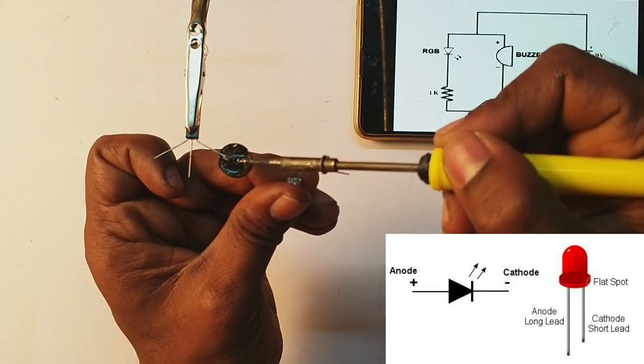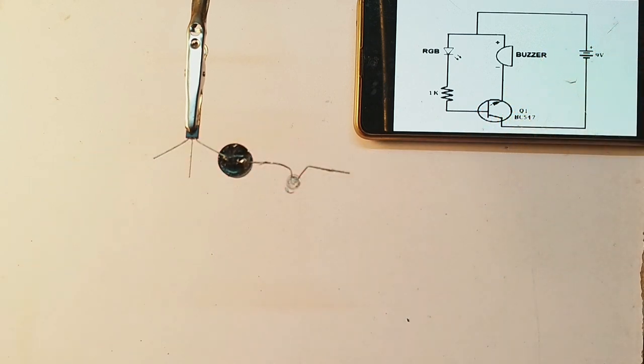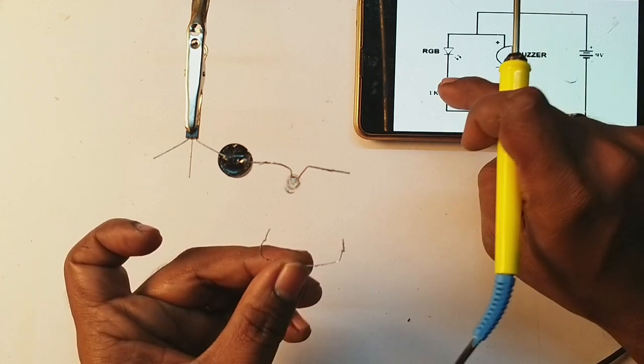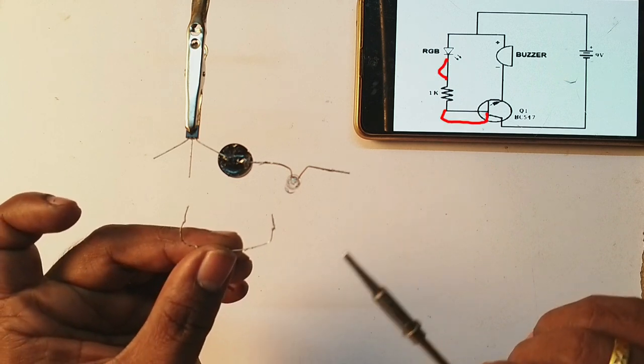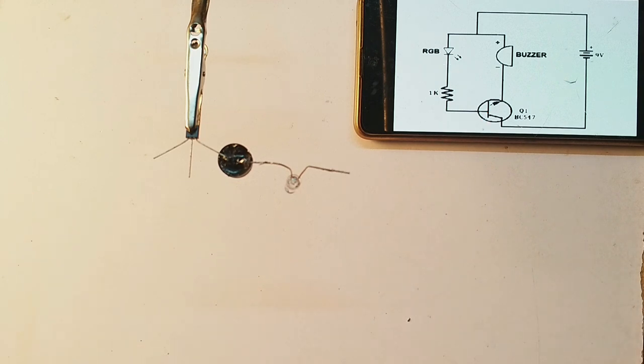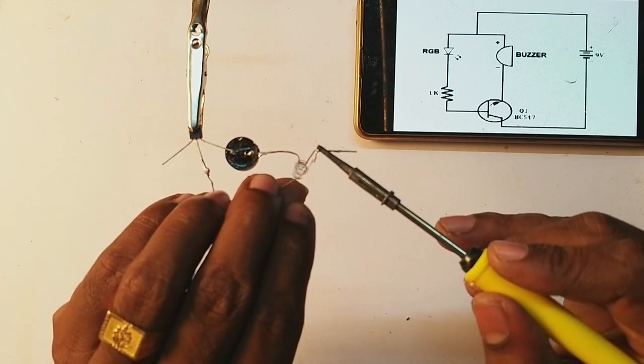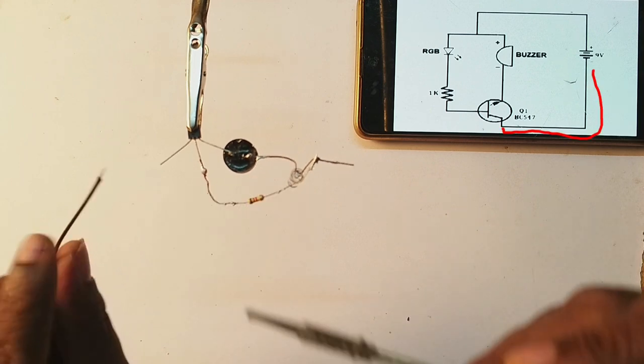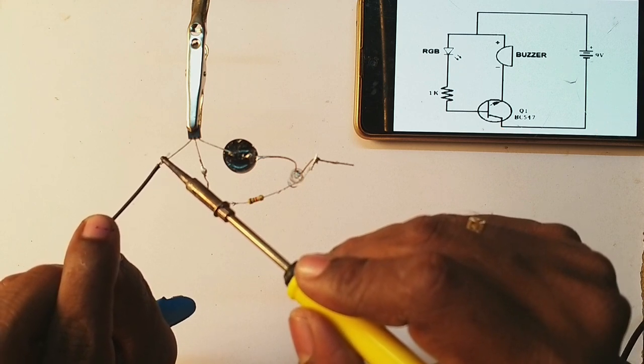The short one goes here. The battery's black wire connects to the transistor's collector.